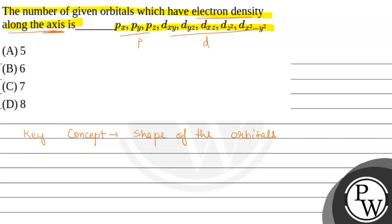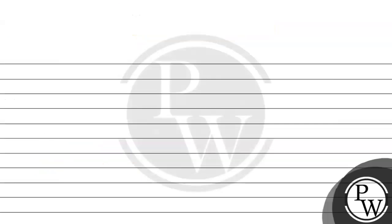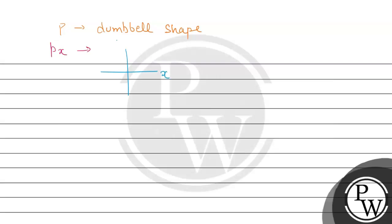We have p orbitals - we have three orbitals: px, py and pz. First of all, let's know about p orbitals. These are the orbitals having the dumbbell shape. The px orbital lies along the x-axis. So this is the x-axis, this is y and this is z.